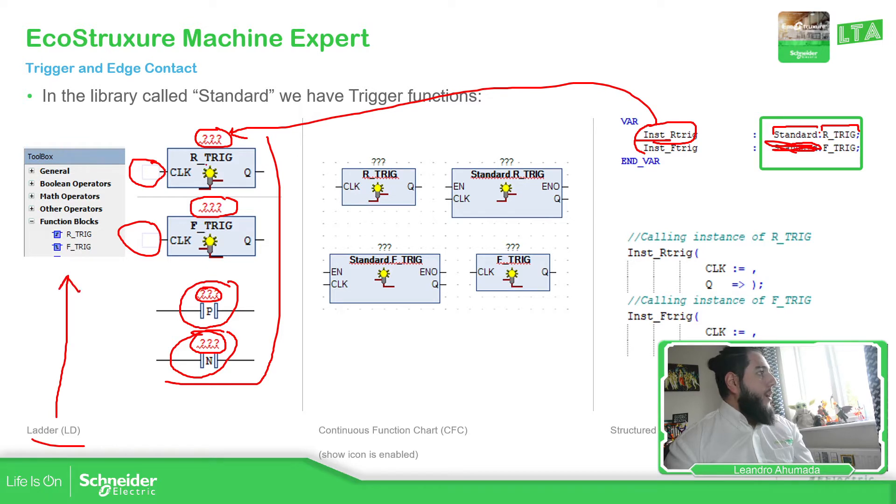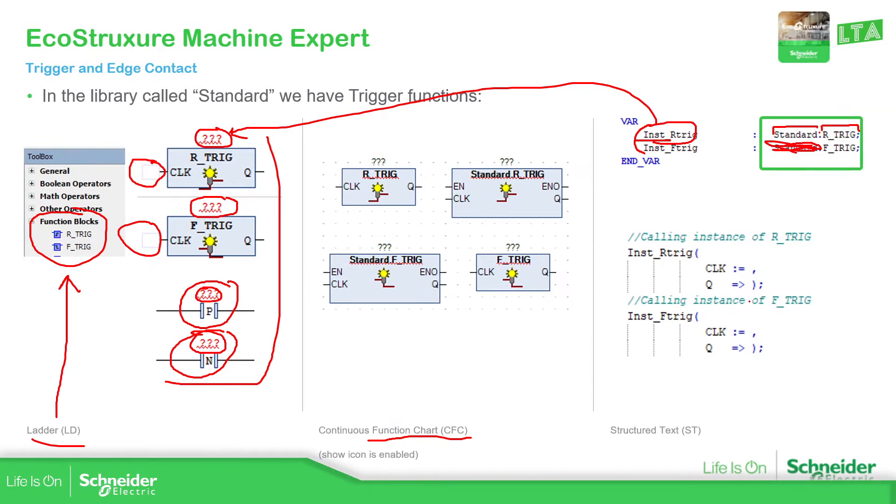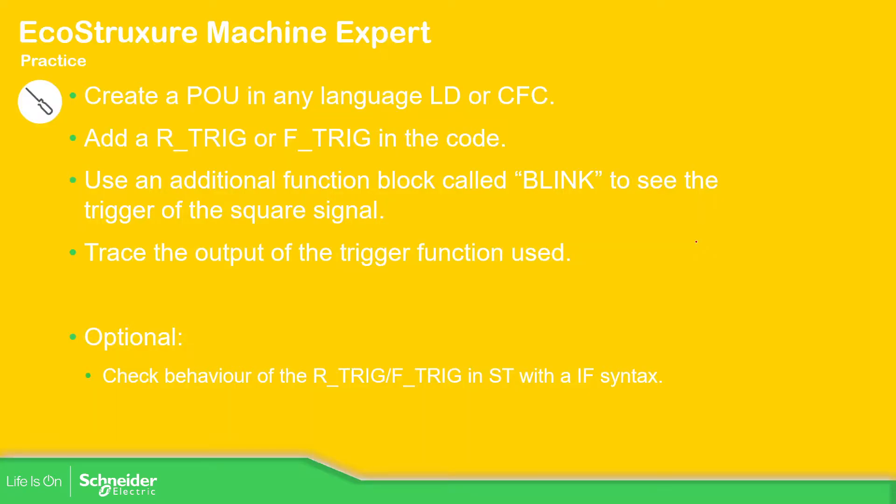You can find this R_TRIG or F_TRIG on the toolbox in the function block area. If you're using the CFC, what you need to do is to drag a box from the toolbox into the area that you're working with and then type R_TRIG or F_TRIG. From the structure test, as you can see over here, the easiest way is to define the name of the instance with the variable type of the trigger that you want, and then call the instance. So it's going to be much easier to use. So let's try to create a POU ladder or CFC.